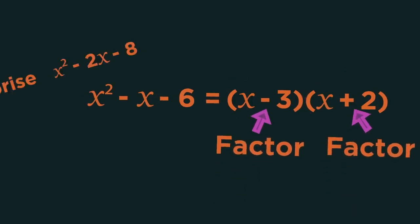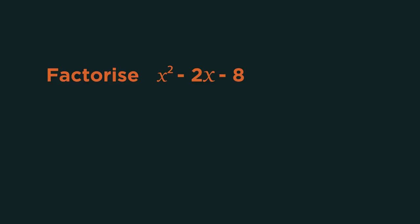So how do we do this? Let's have a look at an example. Start by putting down your two brackets, both with an x at the front. Because when they are multiplied together, they will give the x squared.